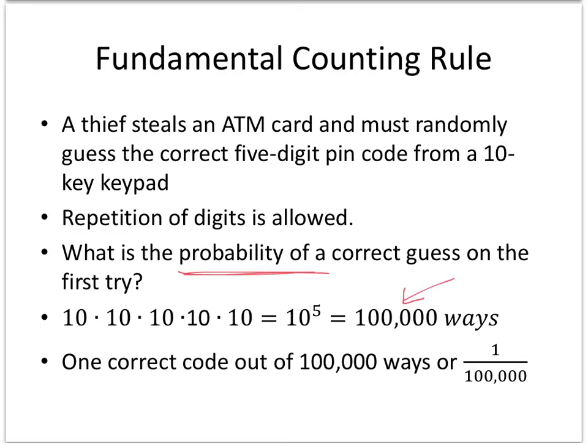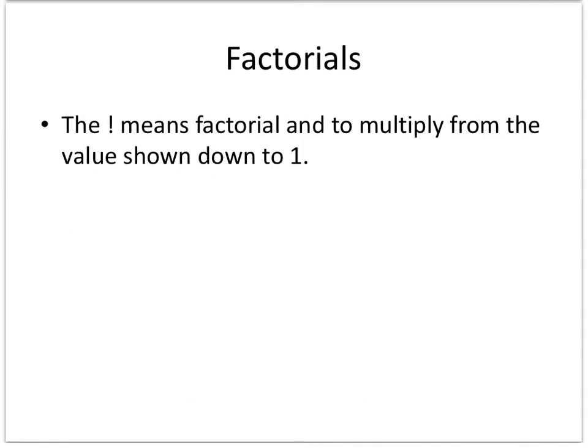There's only one correct code out of the 100,000 different possibilities, so your probability would be one out of one hundred thousand. Now, this symbol — which most of you are used to calling an exclamation point — in statistics means factorial.